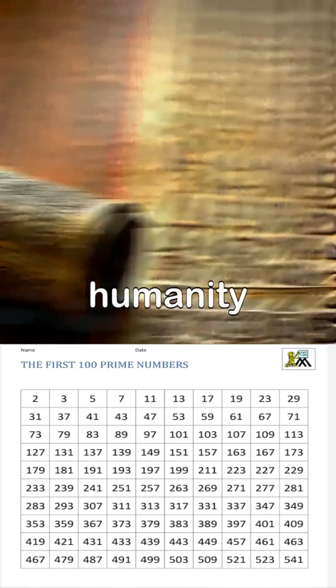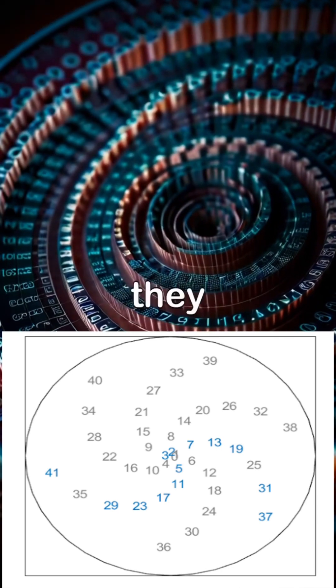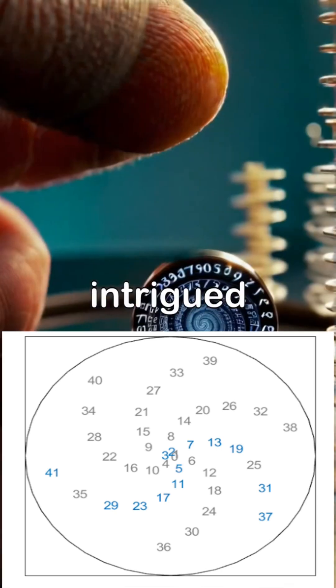Prime numbers have fascinated humanity for a long time. The fact that they form spirals when they are placed on a circle has intrigued mathematicians.